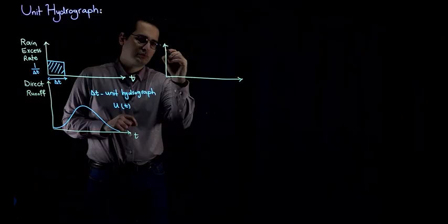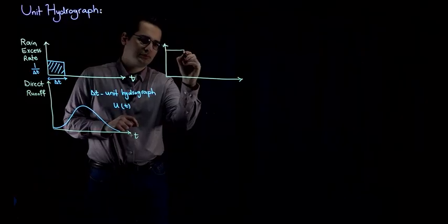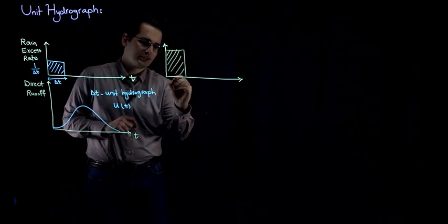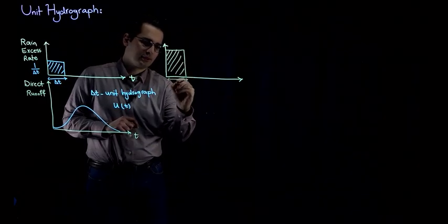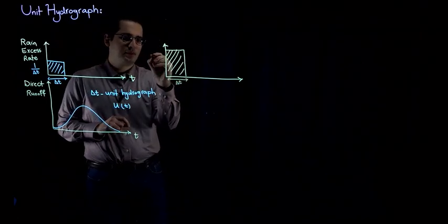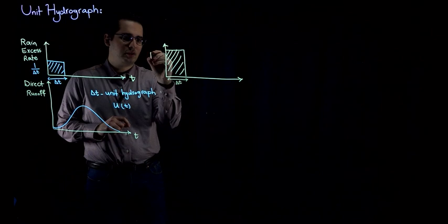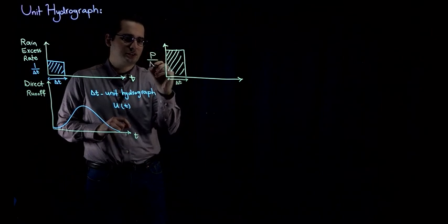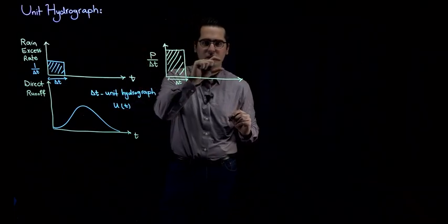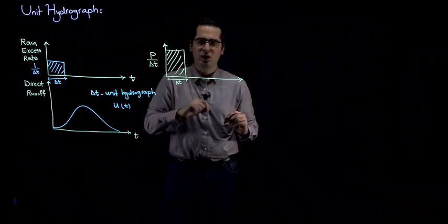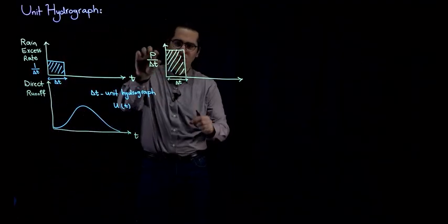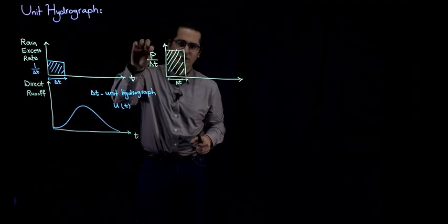I'm going to have a rainfall over here that has the length of delta T. And this time, the rate of rainfall excess is going to be P divided by delta T. That means that P is the depth of rainfall excess over the watershed. All right. So what I want to find is the hydrograph as a result of this rainfall with the depth of P.